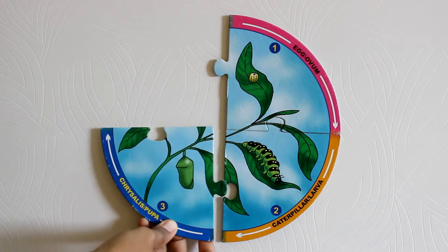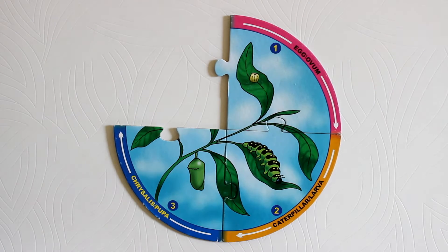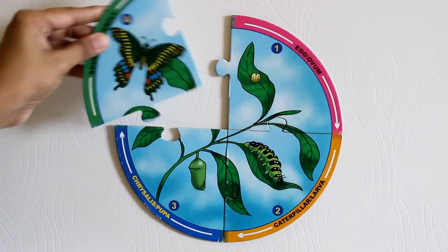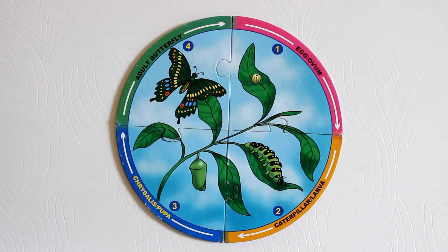The third stage is when the caterpillar becomes pupa, or as we call chrysalis. The fourth stage is when the pupa turns itself into an adult butterfly.